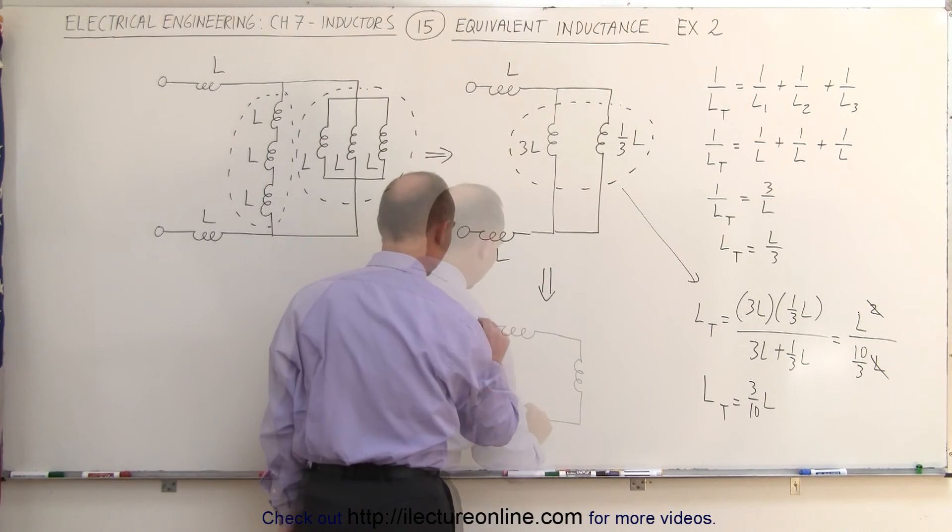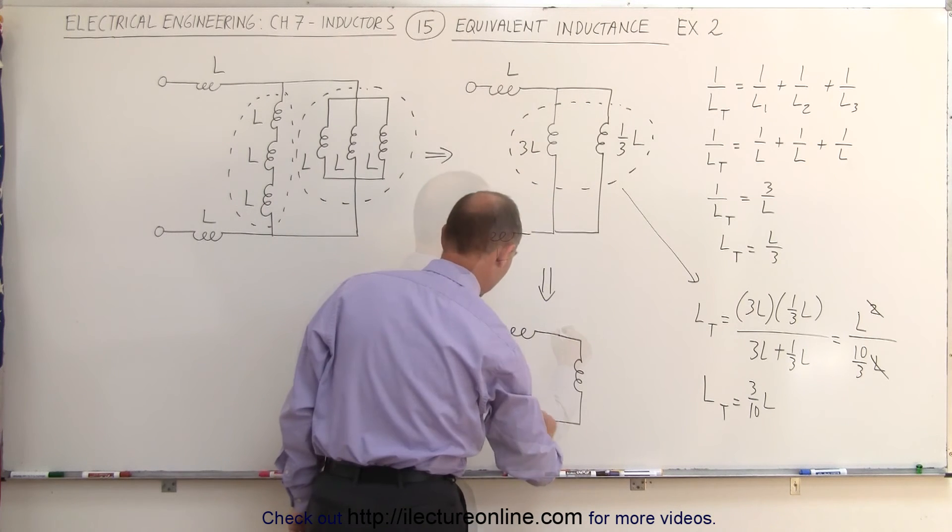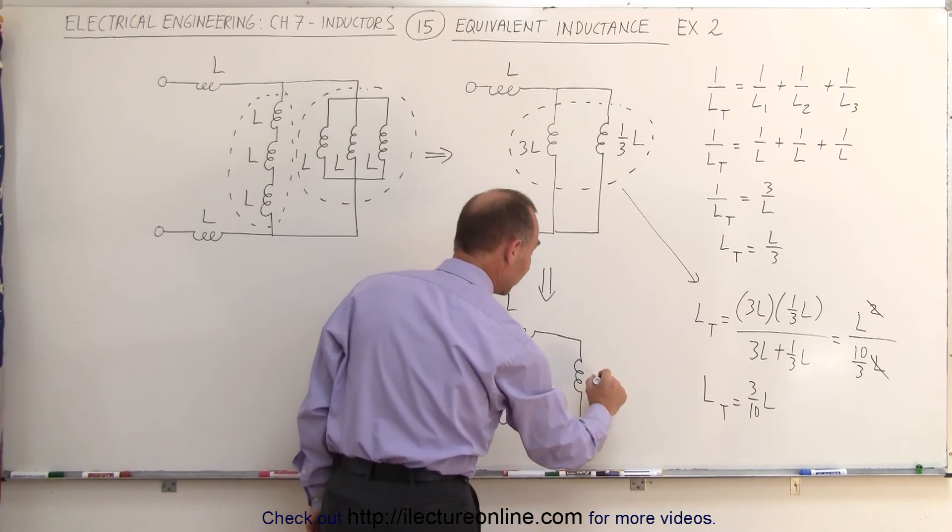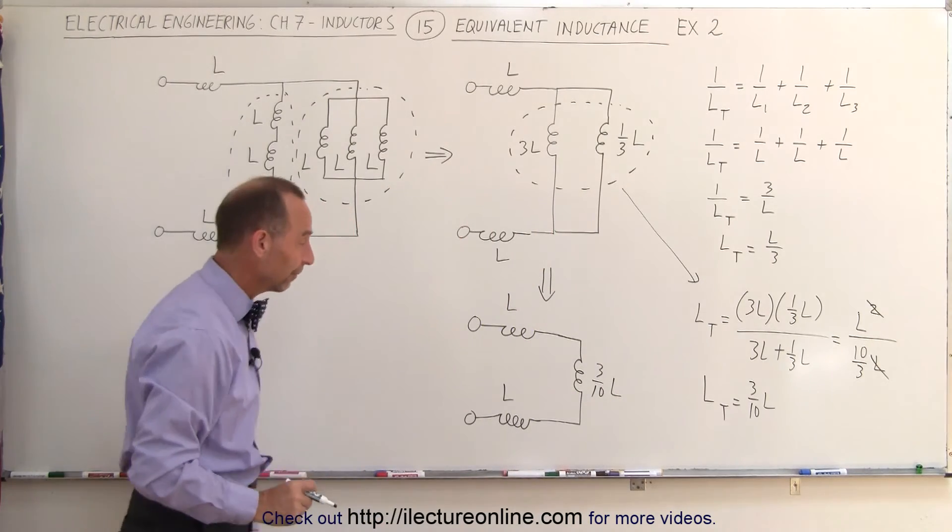So now when we redraw the circuit, we get the following equivalent circuit. We still have that inductor drawn like that. So this is L, this is L, and this is now three tenths L for that equivalent inductor.